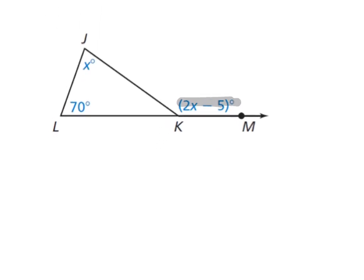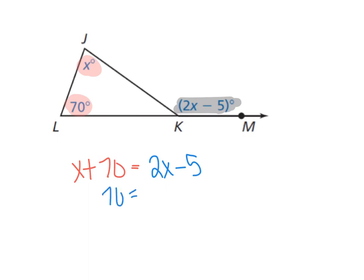Here's what that looks like. Our exterior angle is 2x minus 5, and our two non-adjacent interior angles are 70 and x. So we know that x plus 70 equals 2x minus 5. Solving algebraically — subtract x from both sides to get 70 equals x minus 5. Adding 5 gives us 75 equals x.